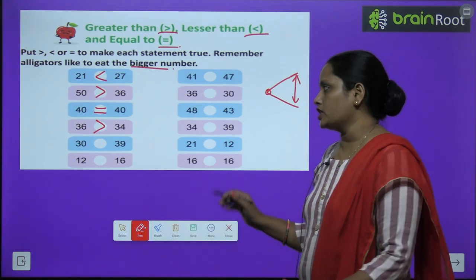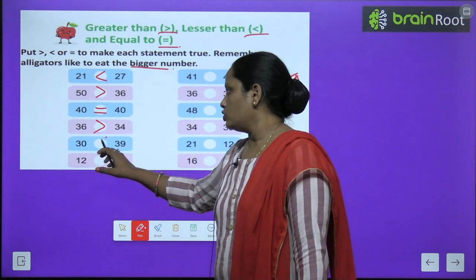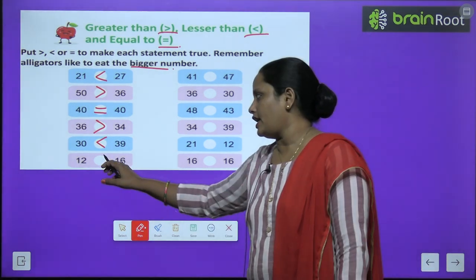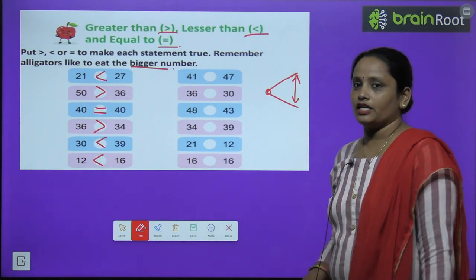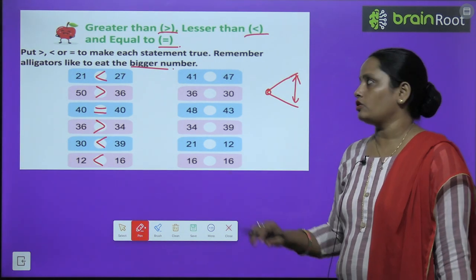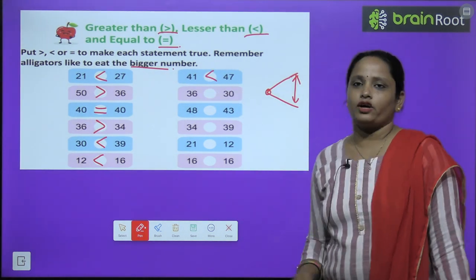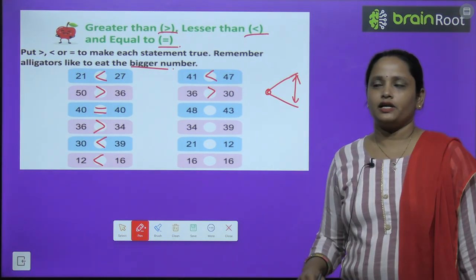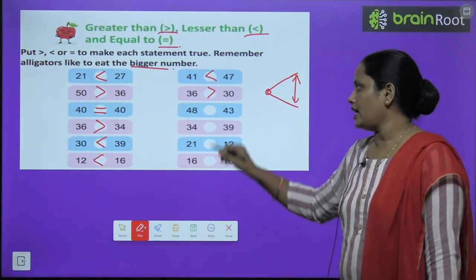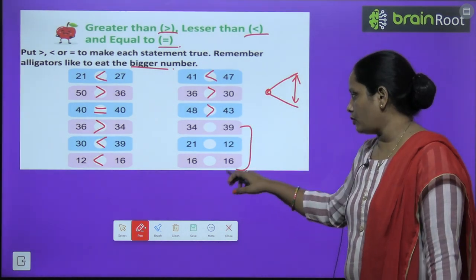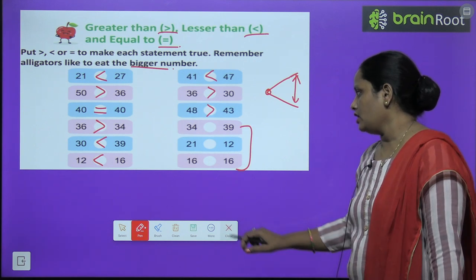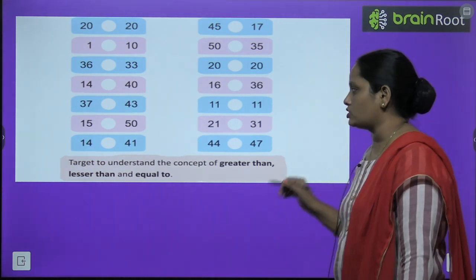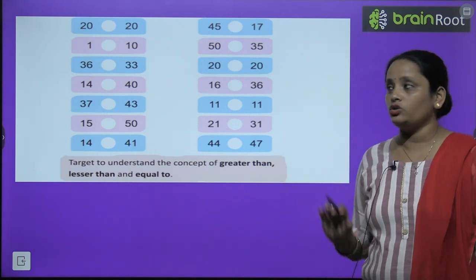Next 30 aur 39, kaunsa number bigger hai? 39, toh chalie mouth open karte hain 39 ki taraf. And similarly 12 aur 16, kaunsa bigger hai? 16, toh humne 16 ki taraf mouth open kiya. Next hai 41 aur 47, which one is bigger? 47 is bigger. 36 aur 30 mein se kaunsa bigger hai? 36 bada hai. 48 aur 43 mein se kaunsa bada hai? 48 bada hai. Baaki 3 aapko khud se pataane hain ki kaunsa bada hai aur uski taraf mouth open karna hai. Similarly children, ye bhi questions diye gaye hain, ye questions bhi aapko khud se karne hain.